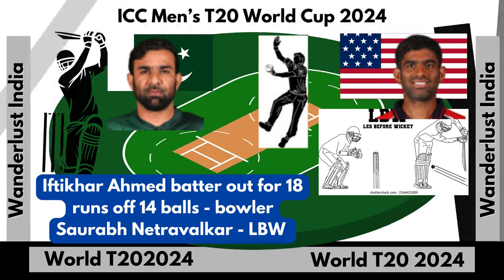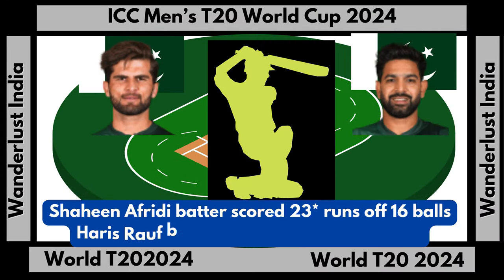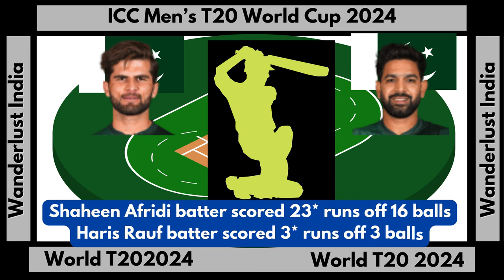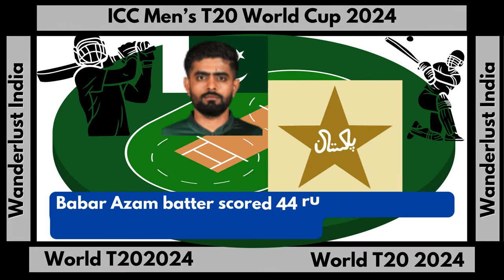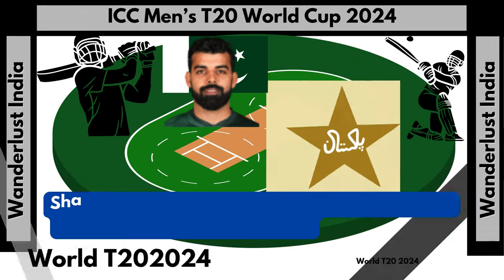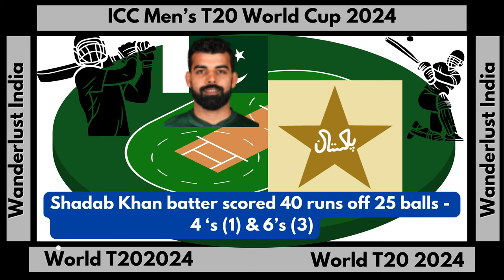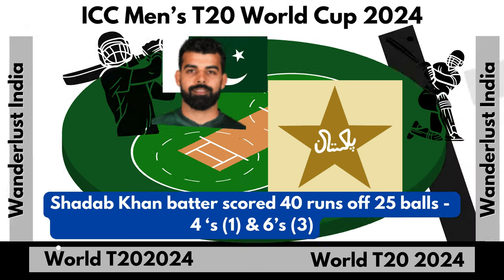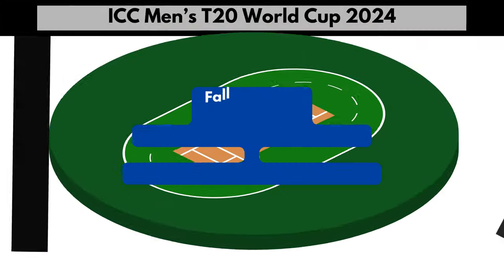Shaheen Afridi scored 23 runs not out off 16 balls. Harris Rauf scored 3 runs not out off 3 balls. Babar Azam scored 44 runs off 43 balls with 3 fours and 2 sixes. Shadab Khan scored 40 runs off 25 balls with 1 four and 3 sixes. Pakistan fall of wickets: 159 runs for 7 wickets.